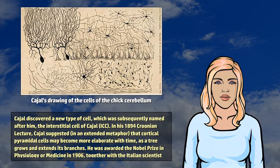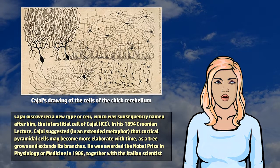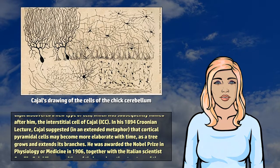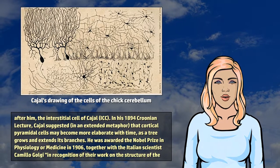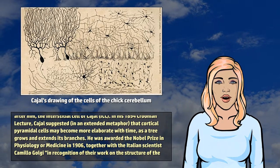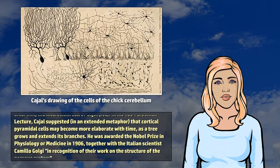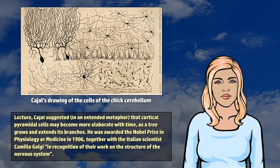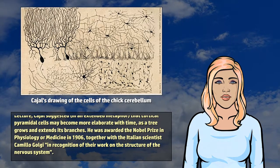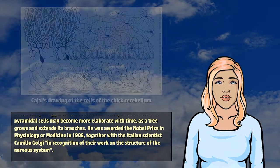In his 1894 Kuhnian lecture, Cajal suggested, in an extended metaphor, that cortical pyramidal cells may become more elaborate with time, as a tree grows and extends its branches.